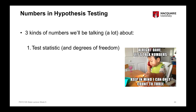The first kind of number that we can have are test statistics, and I've mentioned those a bunch of times thus far. The particular kind of test statistic we have depends on what the statistical test is that we're undertaking — so we'll have a different test statistic for a t-test versus a correlation versus a chi-square test. The value of the test statistic reflects the size of the effect that we have, the size of the difference between the groups, and the size of the association between the two variables.